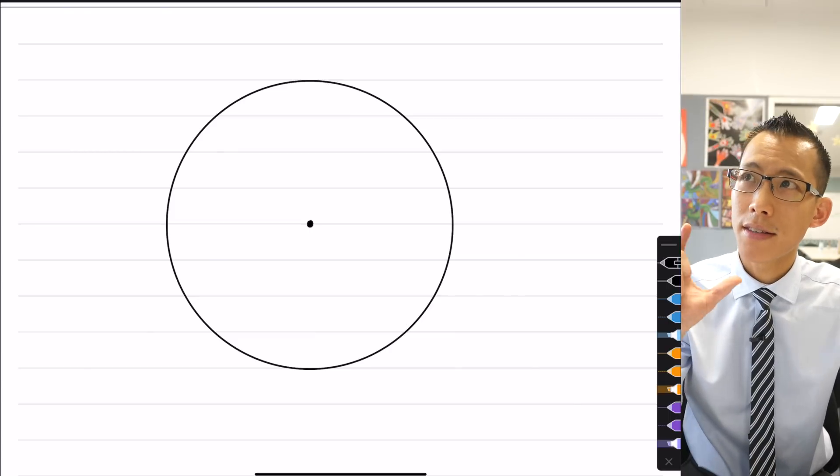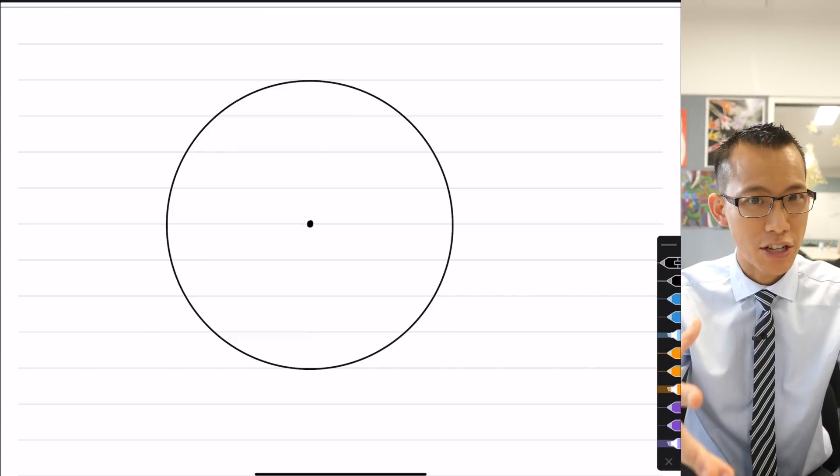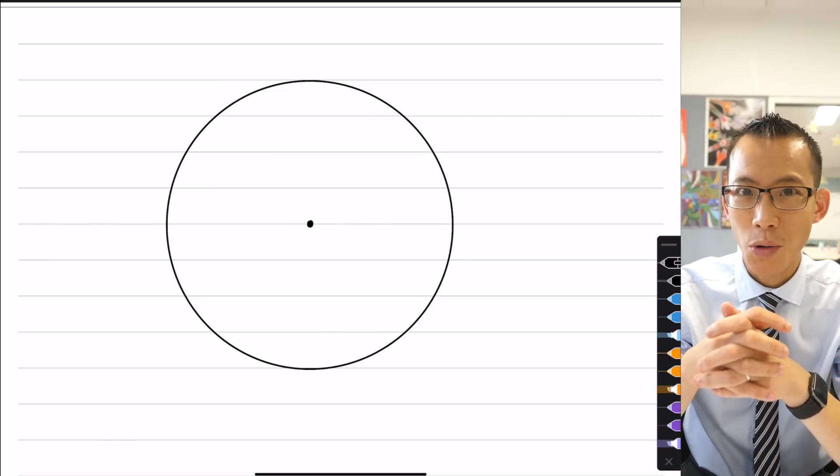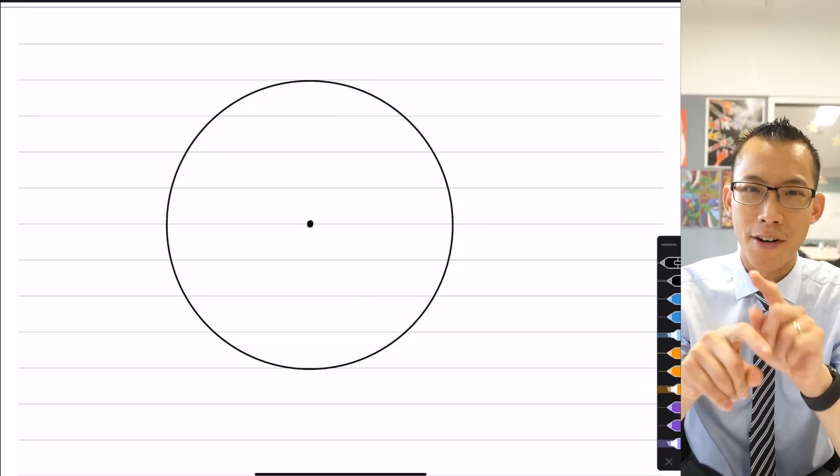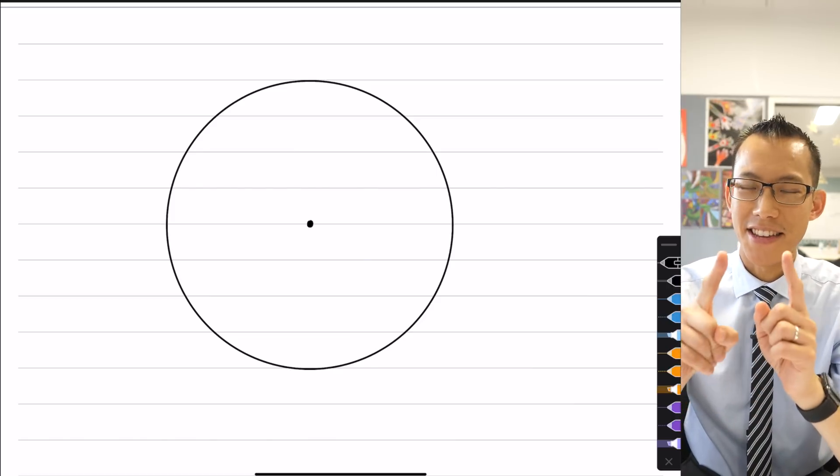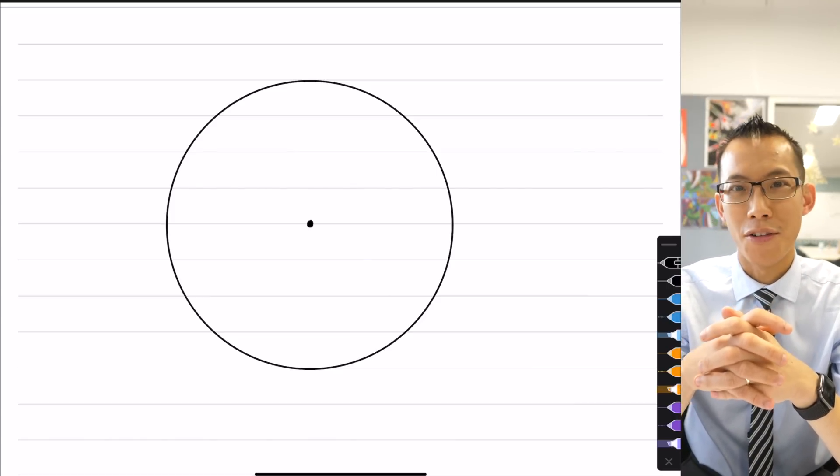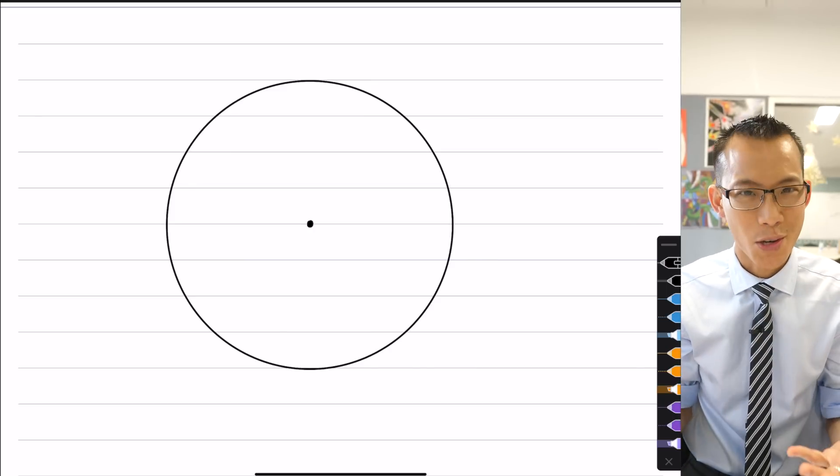Circle geometry no longer features in a deep way throughout the NSW Mathematics Syllabus that I teach. There used to be, in the advanced course, a lot of deductive geometry in plane shapes, which led to a lot of circle geometry in the Extension 1 course, both of which are not really part of the syllabus anymore. However, they haven't disappeared entirely because up in Extension 2,